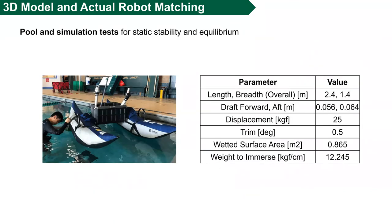With the full ASV setup, we conducted matching of the 3D model and actual robot by hydrostatic tests, including static stability and fundamental parameters, during the simulation and the pull test. With this method, in case of future design shifts, the resultant model equilibrium can be predicted by cross-checking.